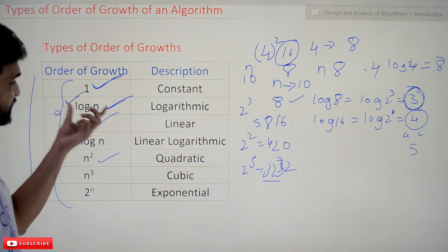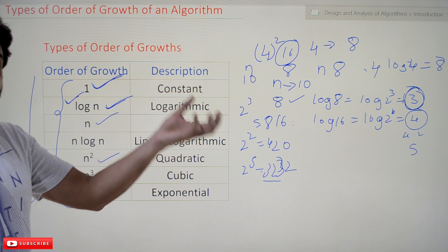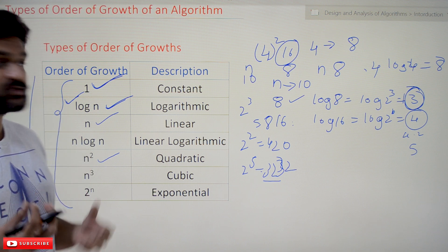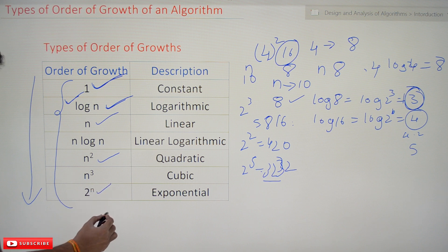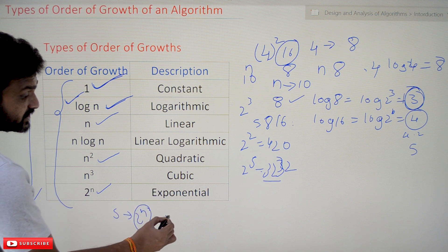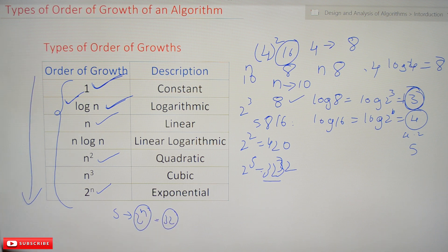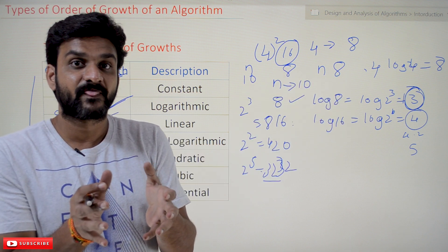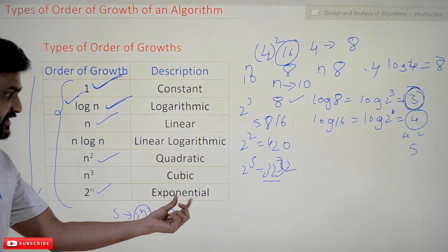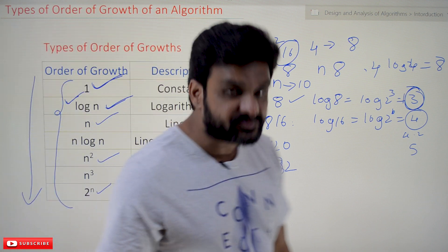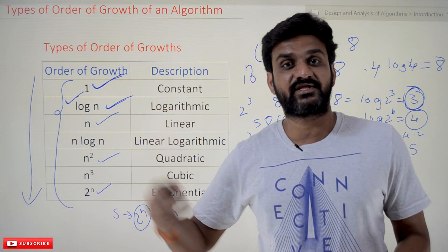For n inputs with log n efficiency, for example 8 inputs means only 3 steps to get the output — these are efficient algorithms. In contrast, for 2 to the power n, with 5 inputs this takes 32 steps to get the output. So this is the highest time taken, making it the least efficient algorithm. These are all the different types of order of growth covered in this course.